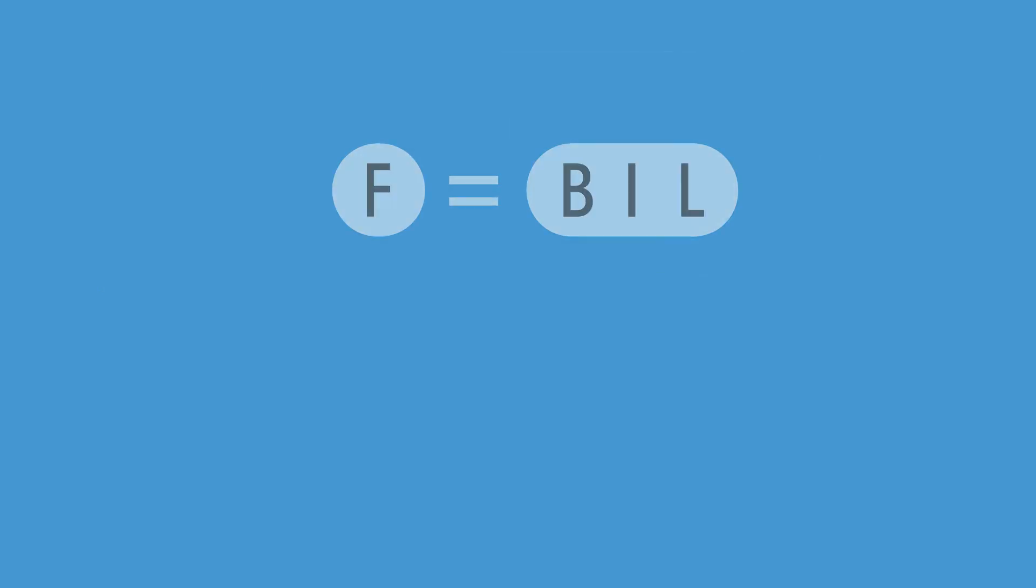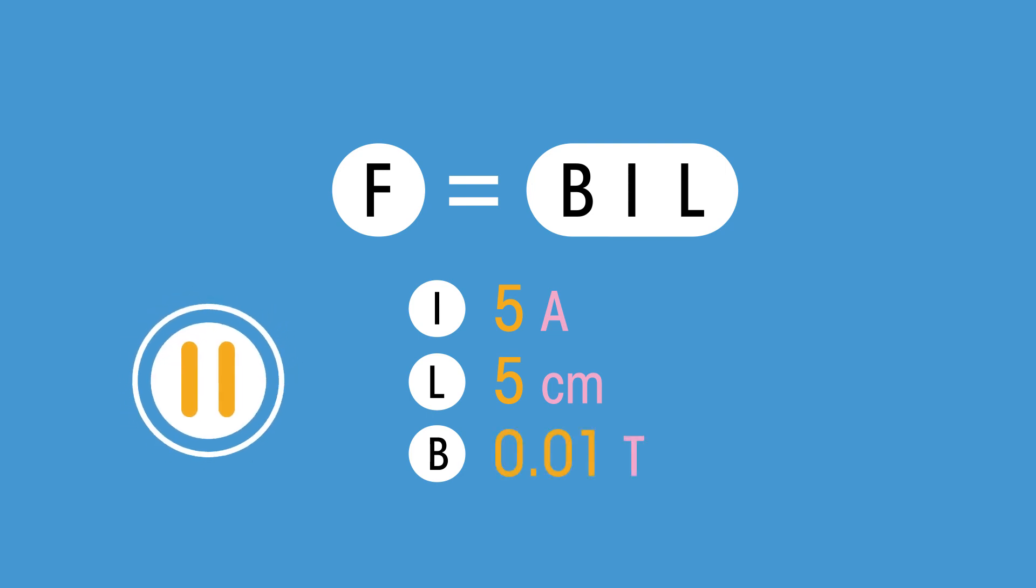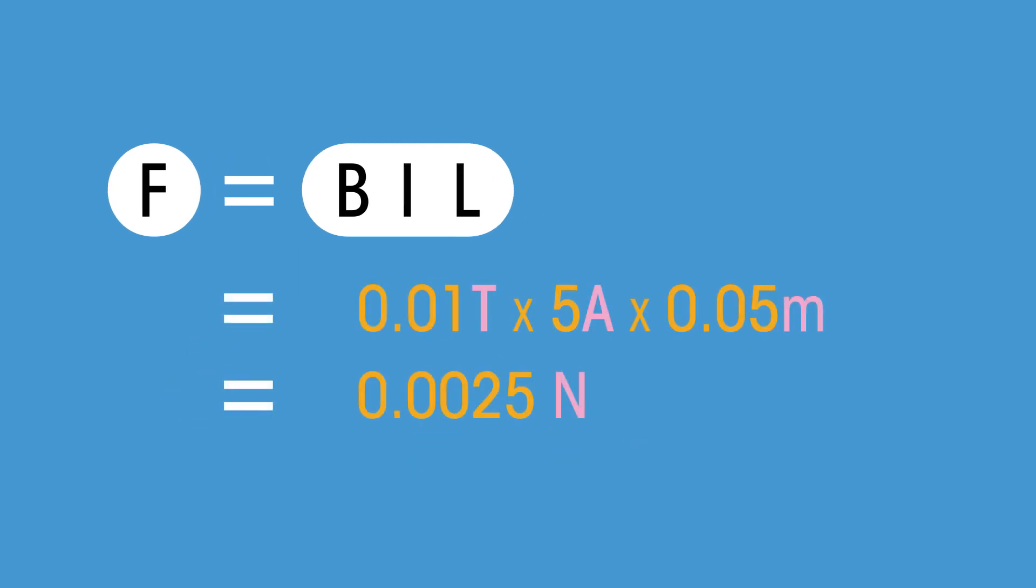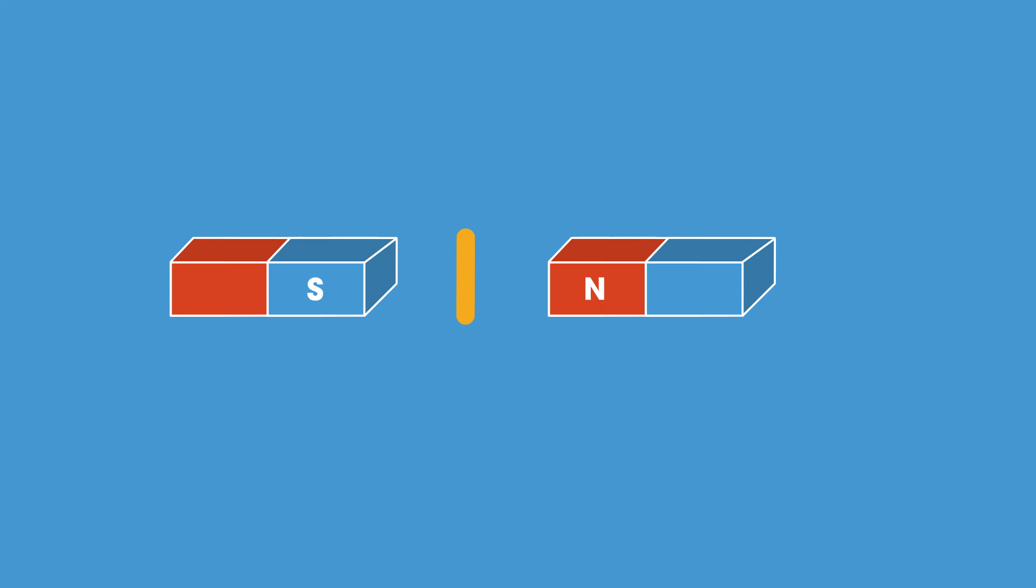Now let's use the formula. Calculate the force on a single wire when the current is 5 amps, the length of the wire in the magnetic field is 5 centimeters, and the magnetic flux density is 0.01 Tesla. Did you get 0.0025 Newtons? Hopefully you remembered to convert 5 centimeters into meters.